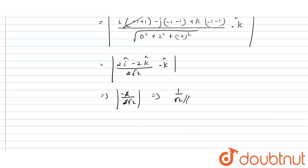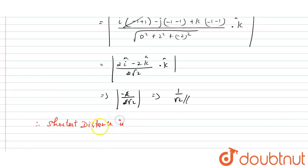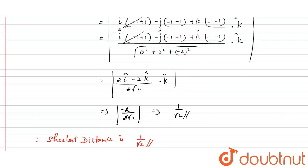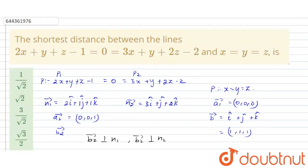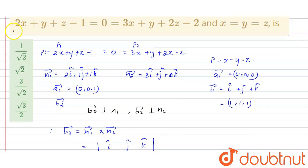Therefore, the shortest distance is 1/√2. Option A is the correct answer.